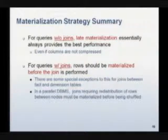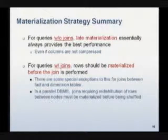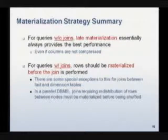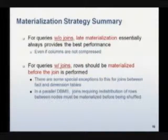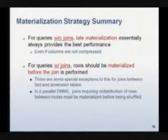You can actually operate on compressed data, a topic I'm going to skip. As columns are being fed into a join, it's just best for the database system to materialize those columns back into rows and have the join operators operate on rows. In a parallel database system, because the column store can be operated inside a node, before you redistribute data between nodes you need to materialize the full tuples before you ship things around.